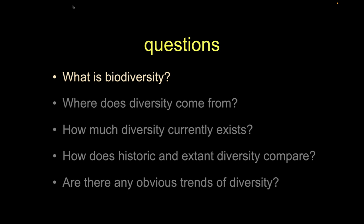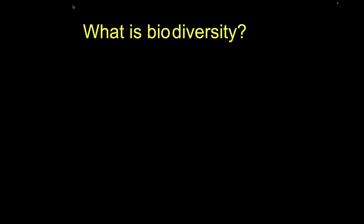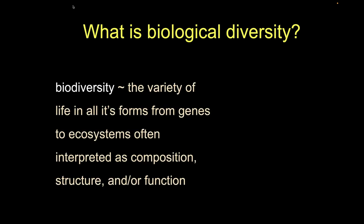So let's talk about what we mean by biodiversity. Obviously biodiversity is a contraction of the two words biological diversity, and this should be obvious from all the readings we've been doing. A textbook definition would be something like the variety of life in all its forms, from genes to ecosystems, often interpreted as composition, structure, and/or function. We'll talk about that in a sec, but these three levels are key.